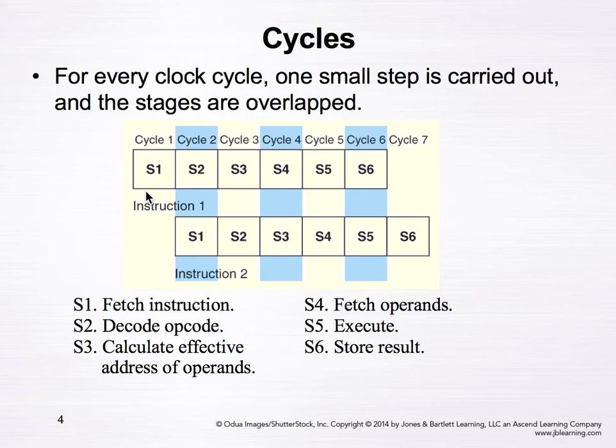In the first cycle, S1 fetches instruction 1. Once S1 has been fetched and is being decoded in cycle 2, we can start fetching instruction 2. When instruction 1 is in S1 (fetching) and instruction 2 is in S2 (being decoded), we can start fetching instruction 3. All the instructions can be carried out in parallel in the same clock cycle.